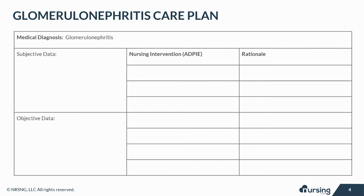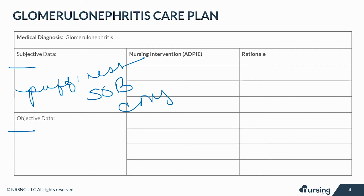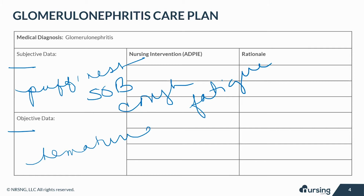Let's take a look at some of the subjective and objective data that your patient with this issue may present with. Subjective data are things based on your patient's opinions or feelings, like puffiness of the face in the morning, urinating less frequently, shortness of breath, cough, fatigue, and recent significant weight change. Objective or measurable data may include hematuria, proteinuria, hyper or hypotension, bubbly or foamy urine, and dark-colored urine.